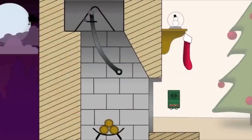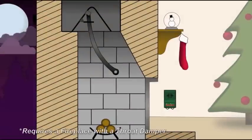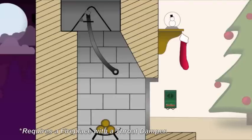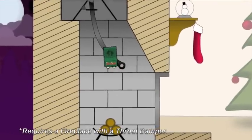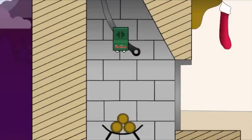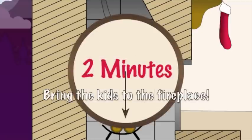This Christmas Eve, wait until the children have left the room and turn the Santa signal on. The three red flashes will let you know it's activated. Then magnetically attach it to the damper handle inside your fireplace. You'll have two minutes of silence to bring the kids over to the fireplace.